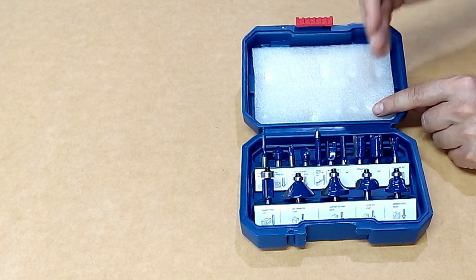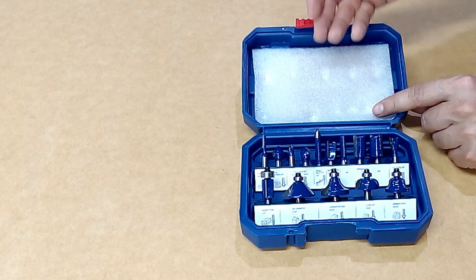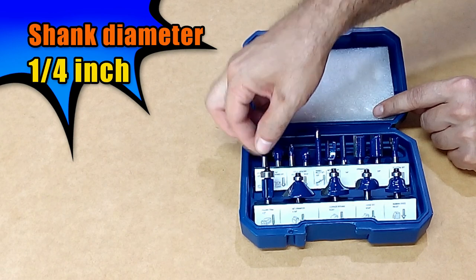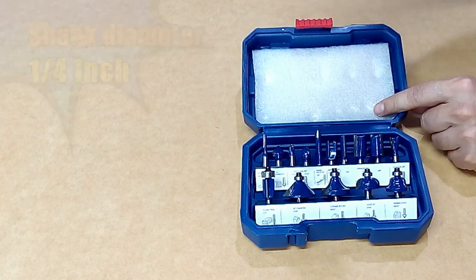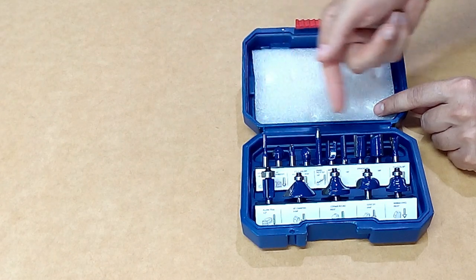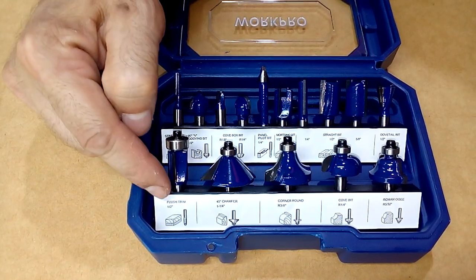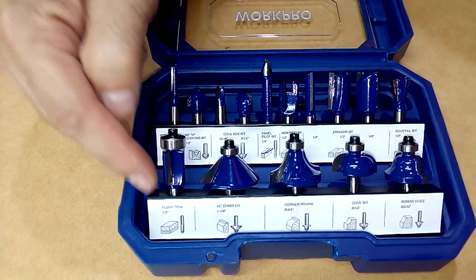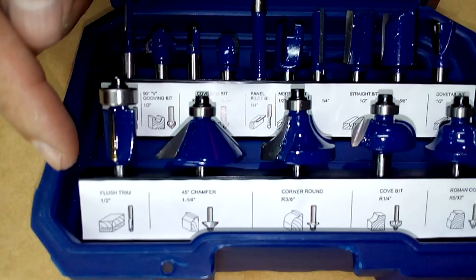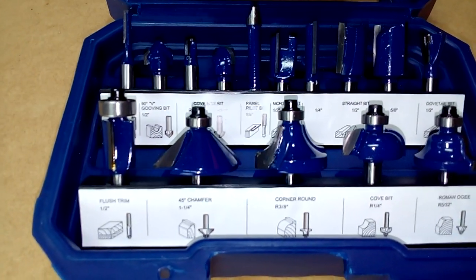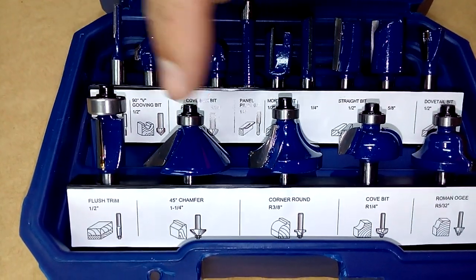We can see that we have several router beads with bearings to finish the edges of our carpentry work and others with different shapes to make grooves in the wood or MDF board. This set of beads has a graph that allows us to know the type of cut and finish that we will obtain when using each of the router beads.